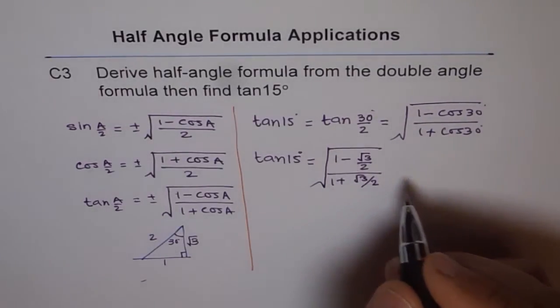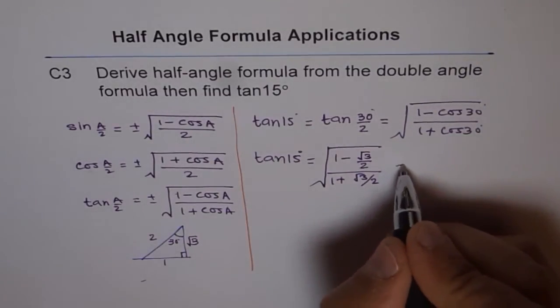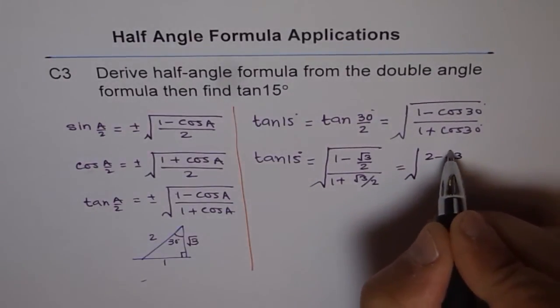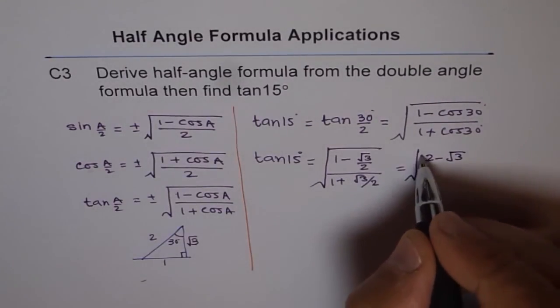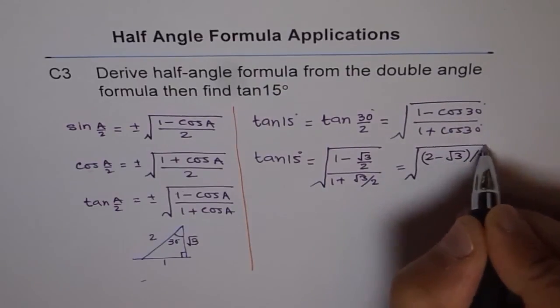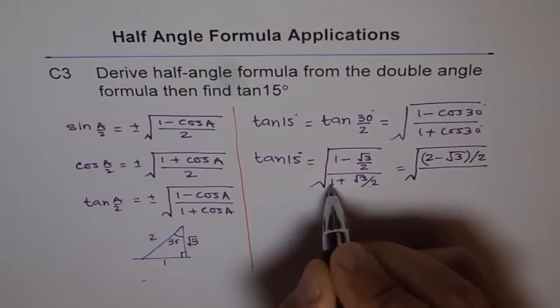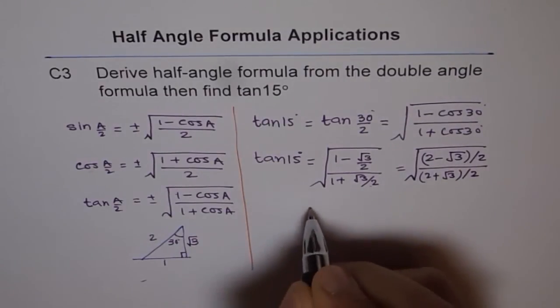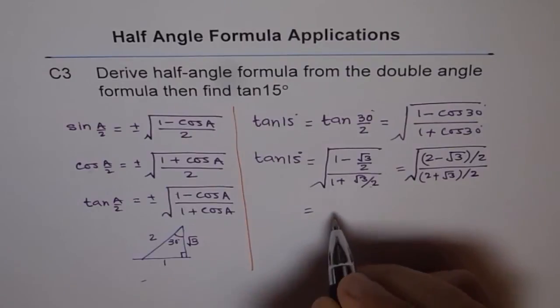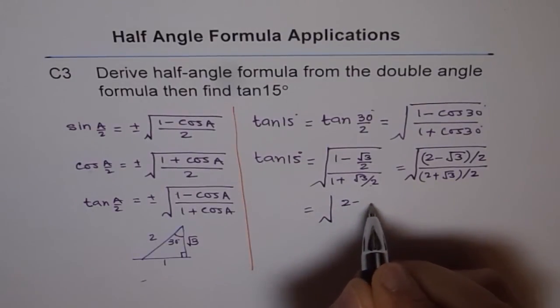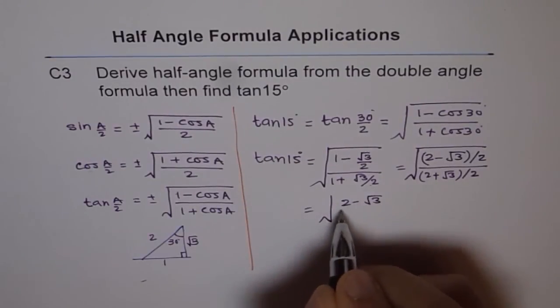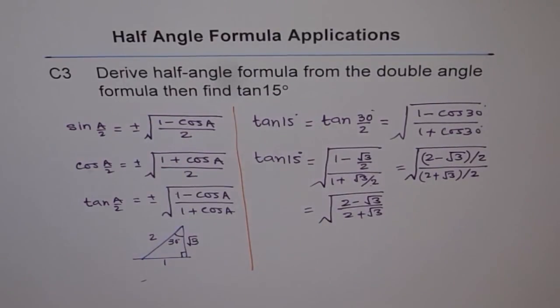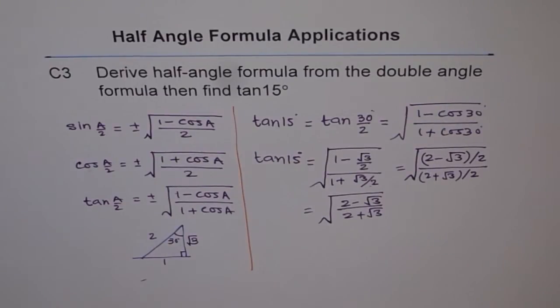Now, this can be simplified as, let me do it here. So, we can take 2 minus square root of 3, divided by 2. So, here 2 and 2 will cancel and we get square root of 2 minus square root of 3, divided by 2 plus square root of 3. So, that becomes our value for tan of 15 degrees.